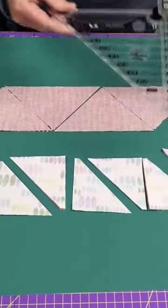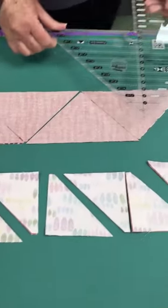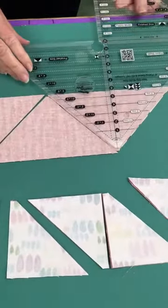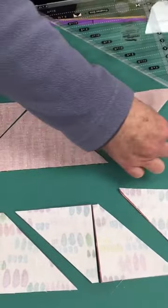The quarter square triangles, you're going to again cut off a strip set. You'll use the other side of the tool, cut one, cut another as you rotate, and you'll just flip flop your tool down the stack.